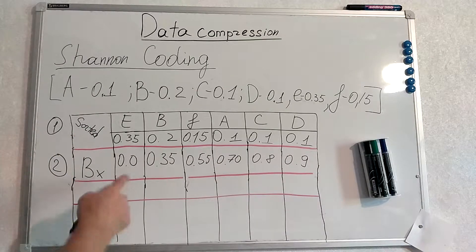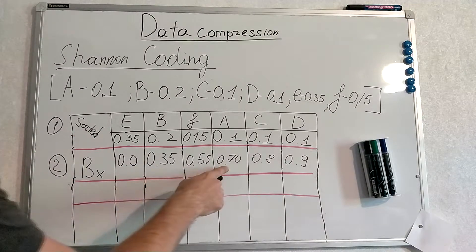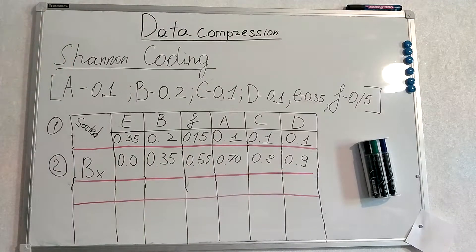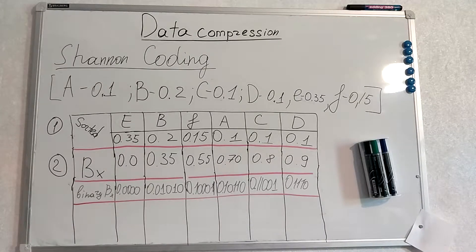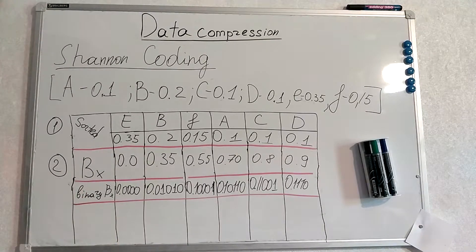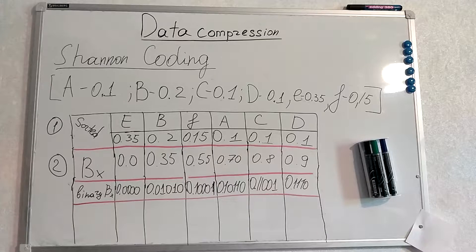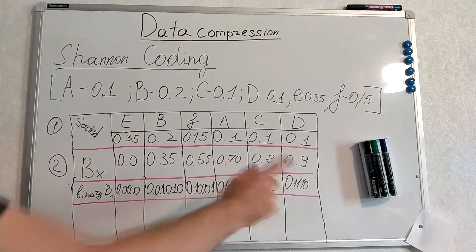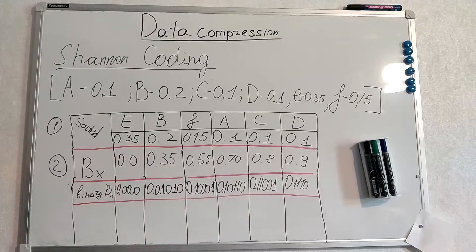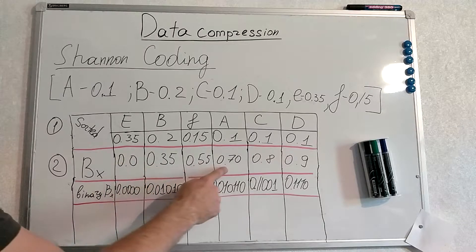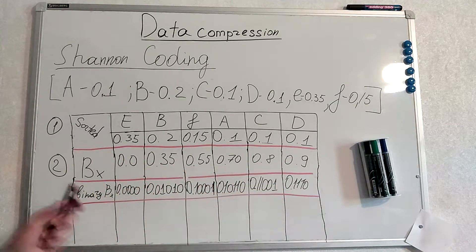We just transform these fractional decimals into binary. I have prepared it already. I will write it down now. Actually this doesn't have to be binary code in any case. It can be given that you have to transform into ternary code using these probabilities we've got on the Bx step.